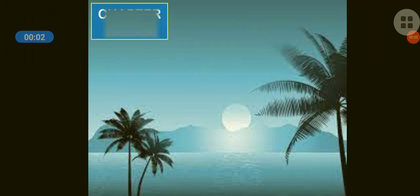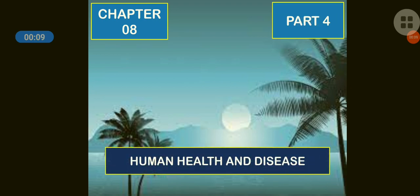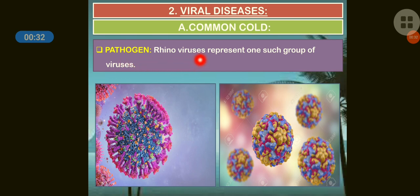Hello students, let us start with chapter 8, part 4. The chapter name is Human Health and Disease, and now we are studying the new heading: Viral Diseases. The first one we are studying is the common cold, whose pathogen is the rhinovirus, which represents one such group of viruses.